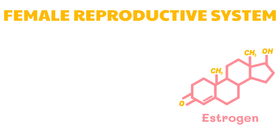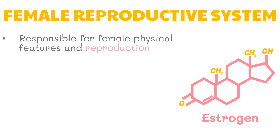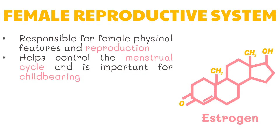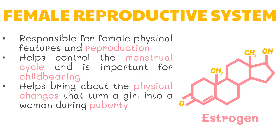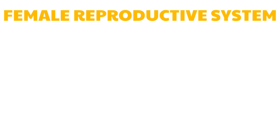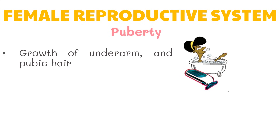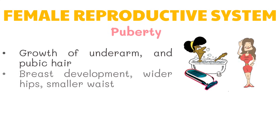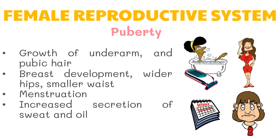Estrogen is one of the two main sex hormones that women have; the other is progesterone. Estrogen is responsible for female physical features and reproduction. Men have estrogen too, but in smaller amounts. Estrogen helps control the menstrual cycle and is important for childbearing. It helps bring about the physical changes that turn a girl into a woman during puberty. The ovaries are the main source of estrogen in a woman's body. Secondary female characteristics developed during puberty include growth of underarm and pubic hair, body changes such as breast development, wider hips and a smaller waist, the beginning of menstruation, and increased secretion of sweat and oil.